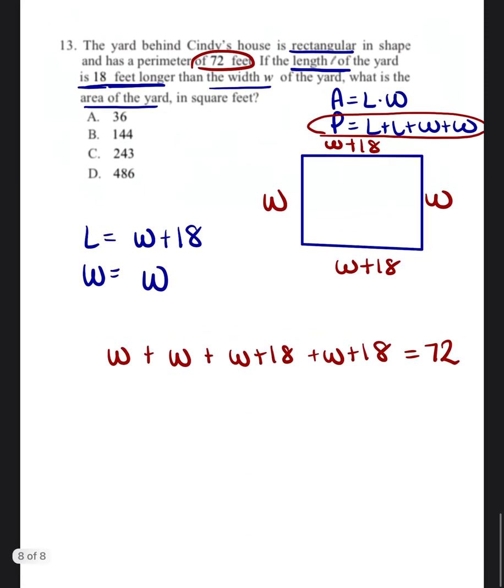So let's go ahead and solve. We're going to combine like terms. So all the terms that have W in it are like terms. There's one, two, three, four W's. So we'll end up with four W.